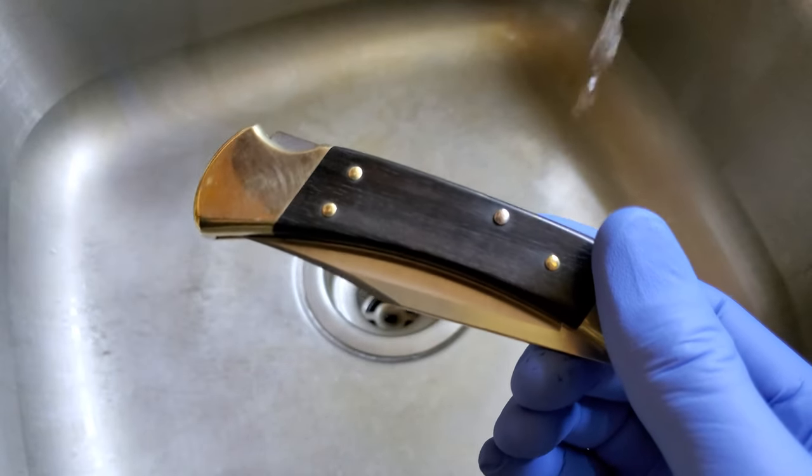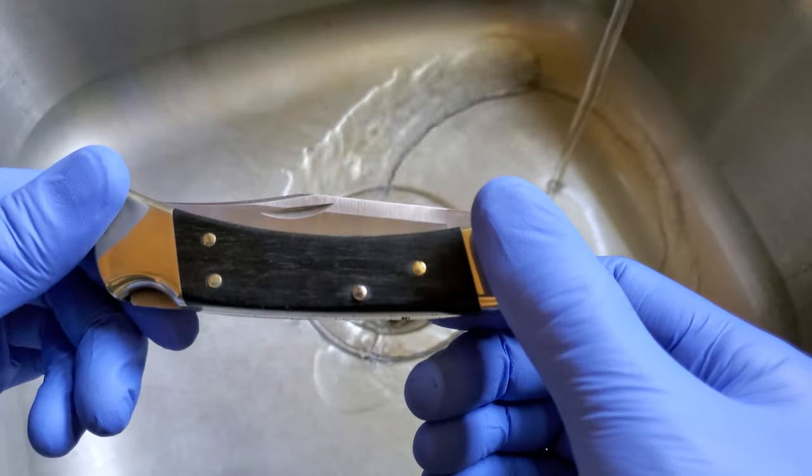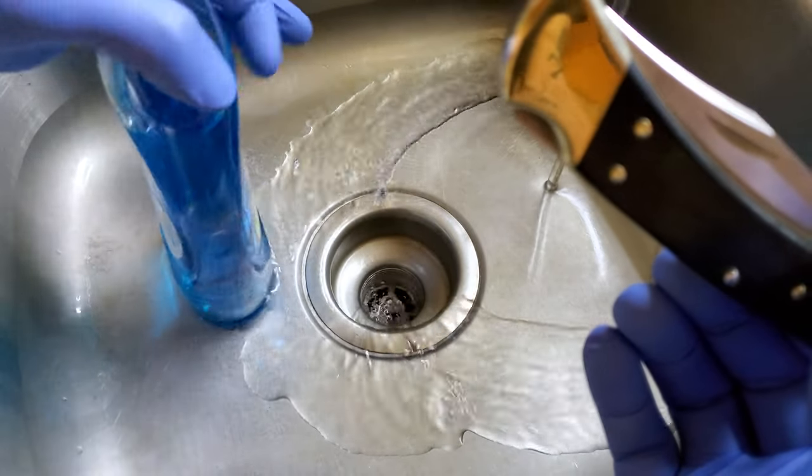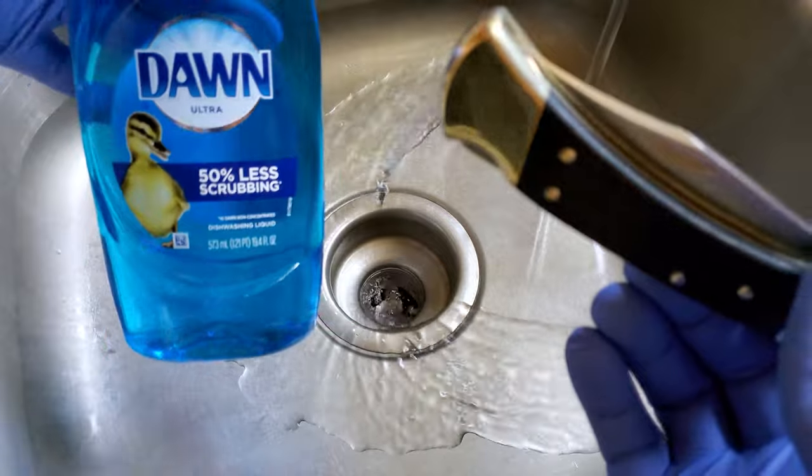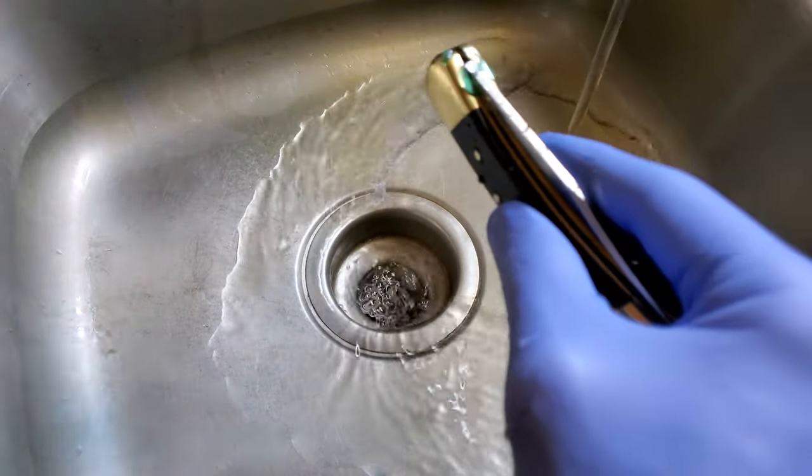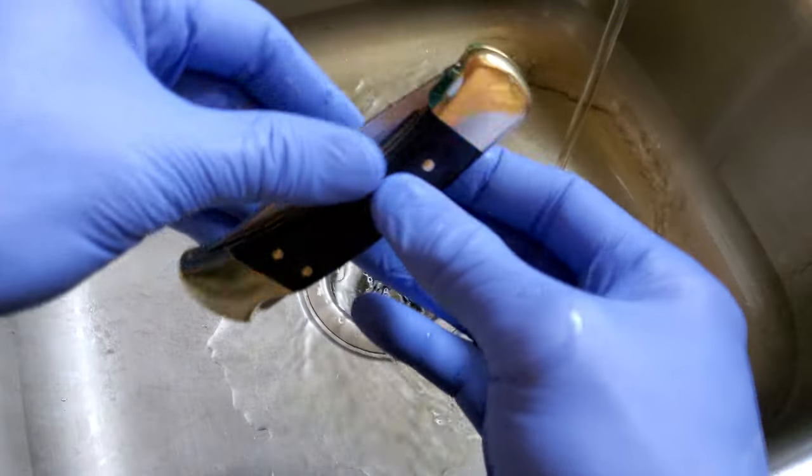So the first thing we're going to do is get our water running nice and hot and we're just going to use dish soap. I prefer Dawn. This is what we keep in the house. I'm going to get the knife a little bit wet and then right in the frame, or right in the pivot rather.